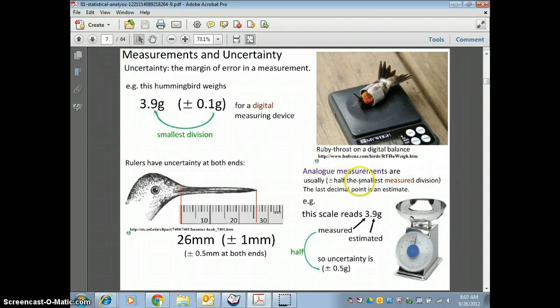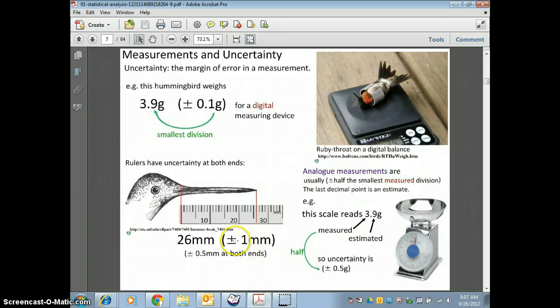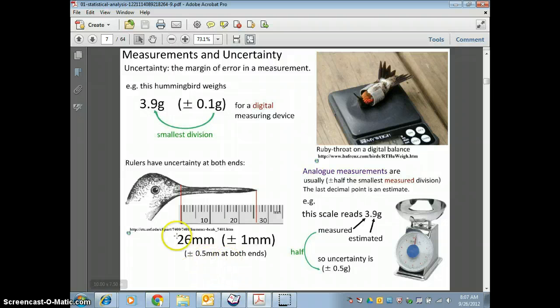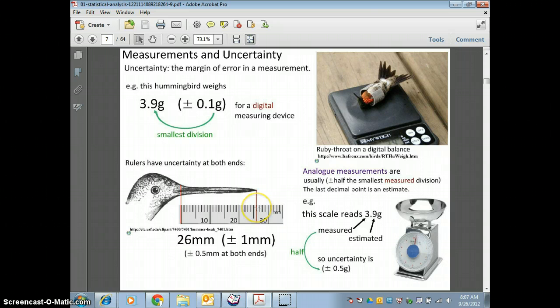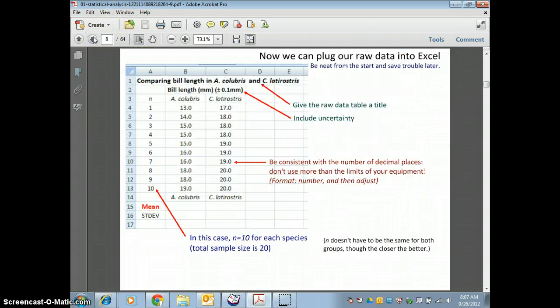Remember that we're going to use half of the smallest measured division to calculate your plus or minus. So in this ruler, when they're measuring the hummingbird, they're measuring it's 26 millimeters, plus or minus one. Now half would have been plus or minus 0.5, but they're saying because there would be plus or minus 0.5 on this end and plus or minus 0.5 on that end. We won't have to worry about that on your quiz. Just remember, half of the smallest unit of measure.